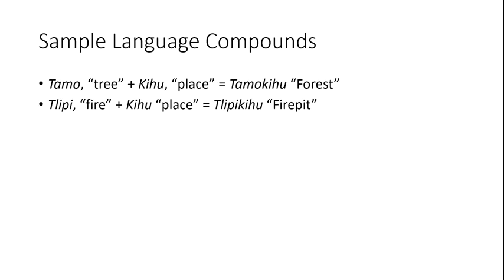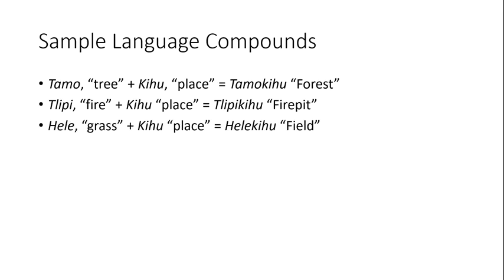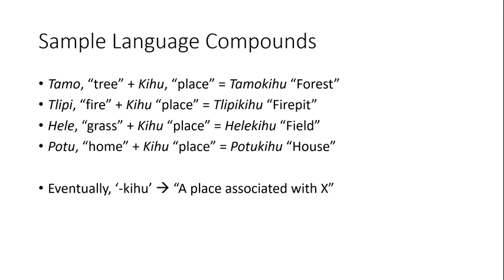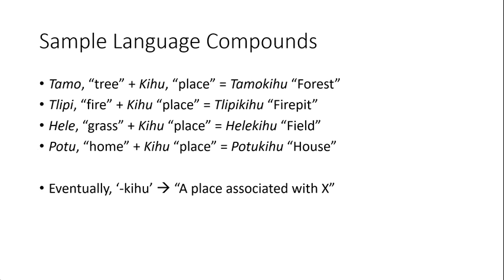And why stop there? What about grass place for field, or home place — house — or any number of other possibilities? If this occurs frequently enough, then eventually our word place may cease to be an independent word, but instead become a derivational suffix that means the place associated with whatever noun it attaches to.